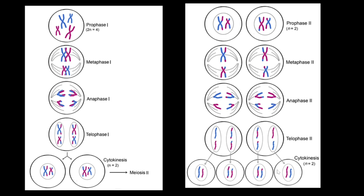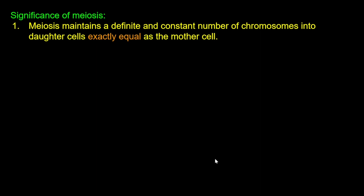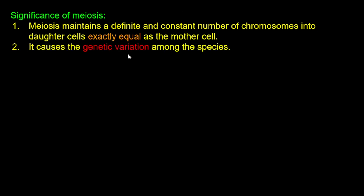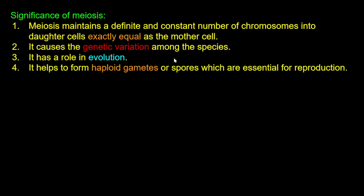The significance of meiosis: first, meiosis maintains a definite and constant number of chromosomes in daughter cells exactly equal to the mother cell. Second, it causes genetic variation among the species. Third, it helps to form haploid gametes and spores which are essential for reproduction.